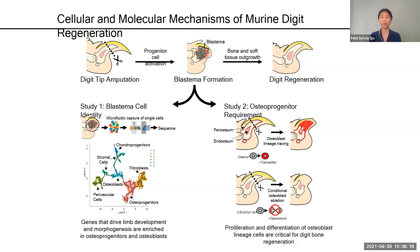Towards this end, I use the mouse digit as a model to study limb regeneration. After digit tip amputation in adult mice, various progenitor cell populations, collectively called the blastema, restore the bone and soft tissues. Interestingly, amputations that occur further up the limb result in scarring. The mechanisms underlying this differential response are unknown and could provide new insights into the development of regenerative therapies.